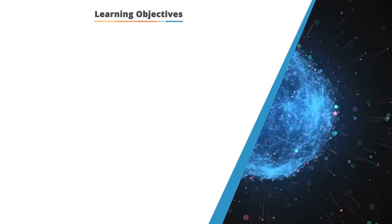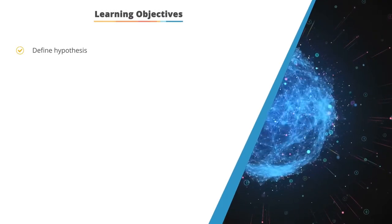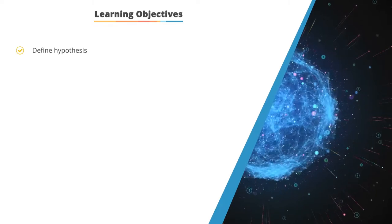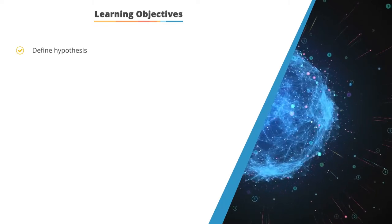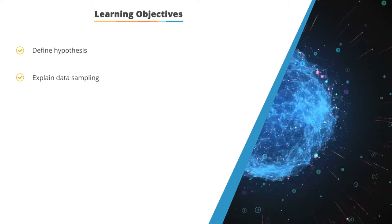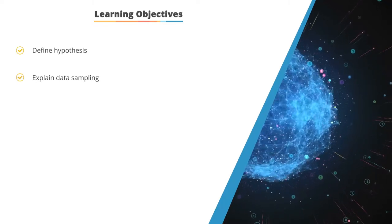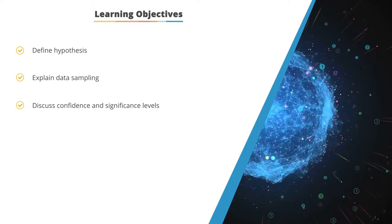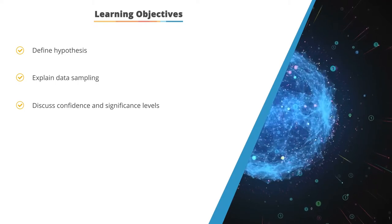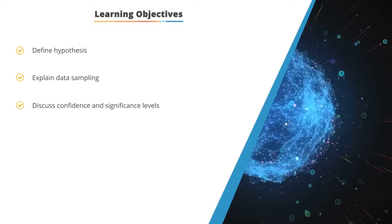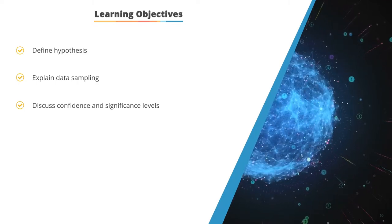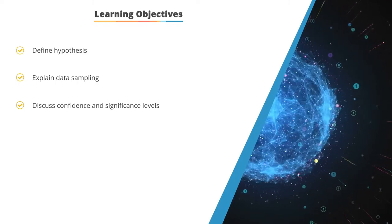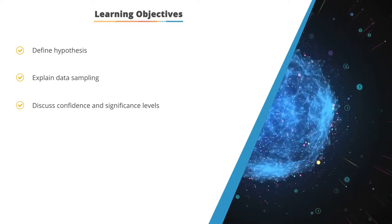Our learning objectives for today: we are going to define hypothesis and hypothesis testing, explain data sampling, and then discuss confidence and significance levels, as well as other aspects of statistics like alpha, beta, and power analysis.